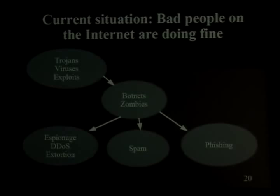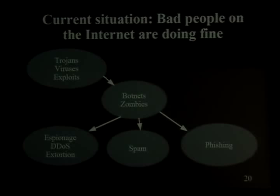The story about the 9/11 hijackers: somebody walked into a library, logged into their Hotmail account, drafted an email but didn't send it, then walked out. Somebody else walked into a different library, logged into the same account, and pulled up the draft. No email was sent, so no email was logged. There are a million little tricks like that. The goal for TOR is to build something that scales, that we can be transparent about, and that's going to work for a long time.